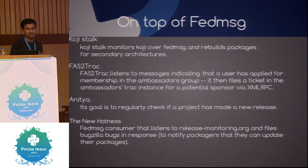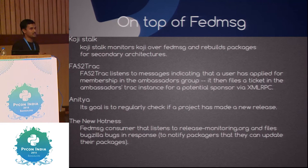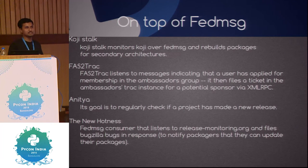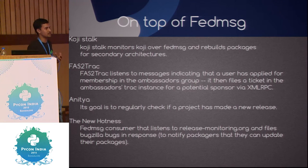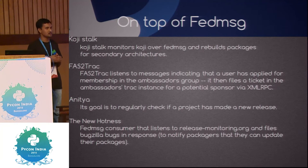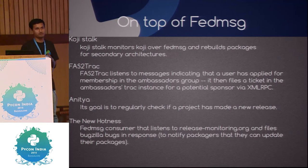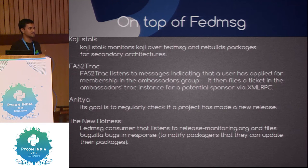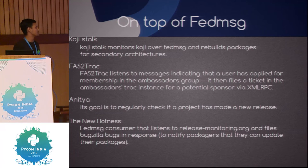Let me show what things are built on top of FedMessage in the Fedora infrastructure. We have COGI stock — whenever a package is being built for the primary architecture, it sends a message to FedMessage and rebuilds and tests the package in secondary architectures. Then we have FasTrack which listens to the ambassador project and automatically creates Bugzilla tickets. The recent project built on FedMessage was Anitya — a tool to check if a project has a new release. When it does, a new-hotness project notifies package maintainers to update their package.